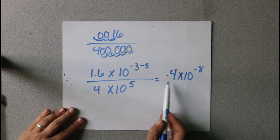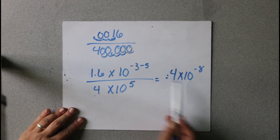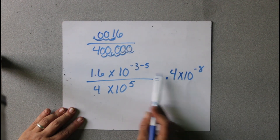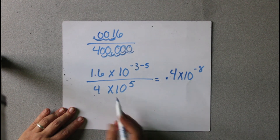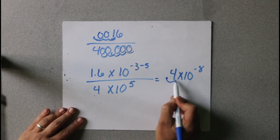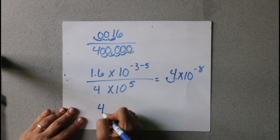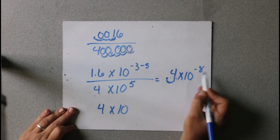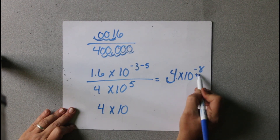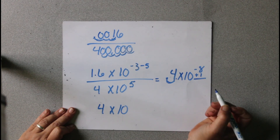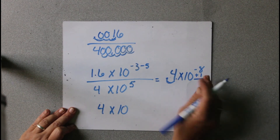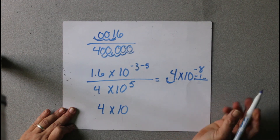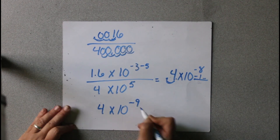That is not the correct answer because that's not proper scientific notation — we need one number in front before that decimal. So we're going to have to move the decimal to there. We need 4 times 10. We moved it — that is a negative 1 movement. So that's going to be times 10 to the negative 9th.